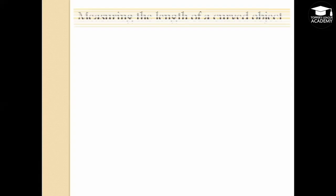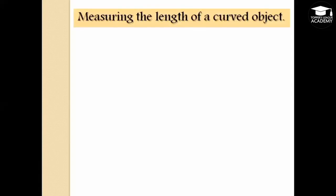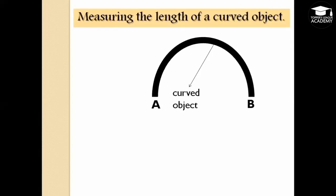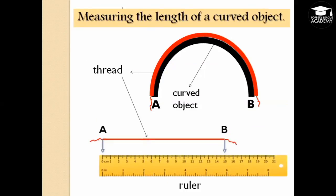To measure the length of a curved object, a different technique is used. A thread is spread along the curved surface between two points A and B, and pulled tight. The thread is then stretched out along a ruler starting from zero to take the measurement. Here the length of the thread is 15 centimeters, so the length of the curved surface is 15 centimeters.